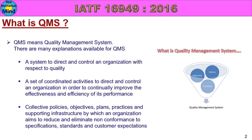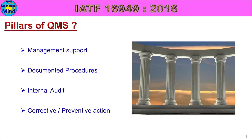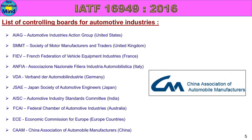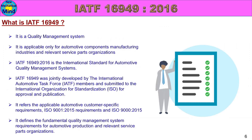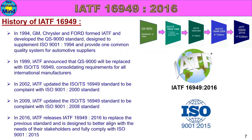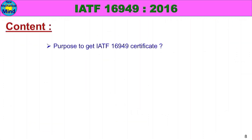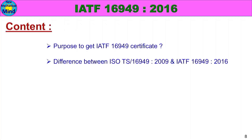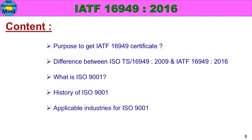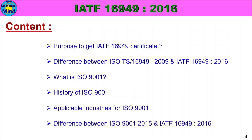In this video, we will see: what is QMS, objectives of QMS, pillars of QMS, list of controlling boards for automotive industries, what is IATF 16949, history of IATF 16949. Part 2 content includes: purpose to get IATF 16949 certificate, difference between ISO TS 16949:2009 and IATF 16949:2016, what is ISO 9001, history of ISO 9001, applicable industries for ISO 9001, and difference between ISO 9001:2015 and IATF 16949:2016.